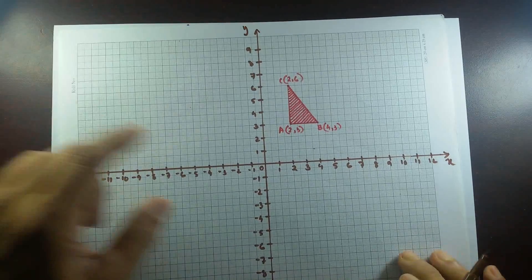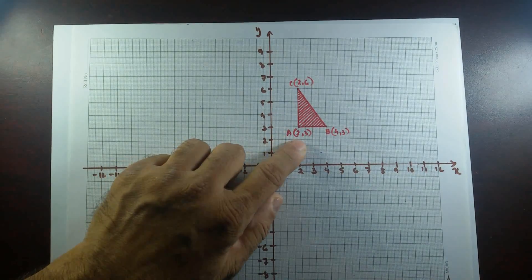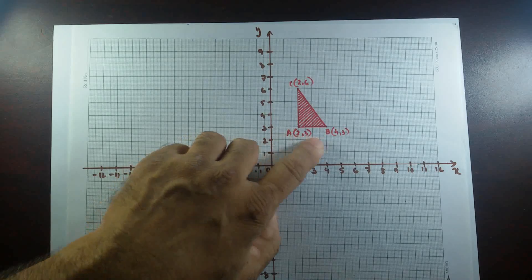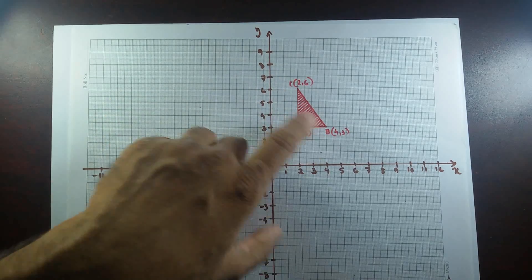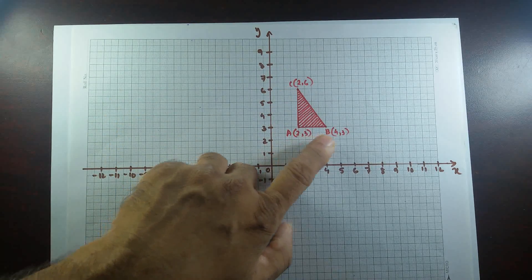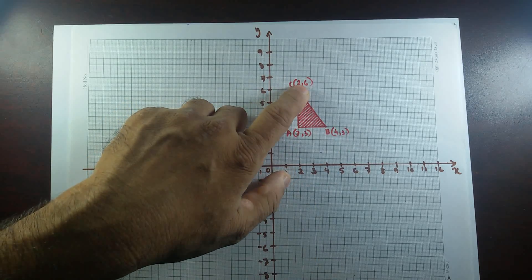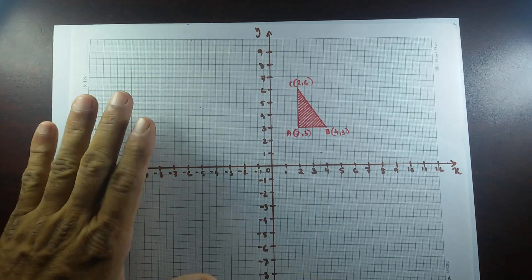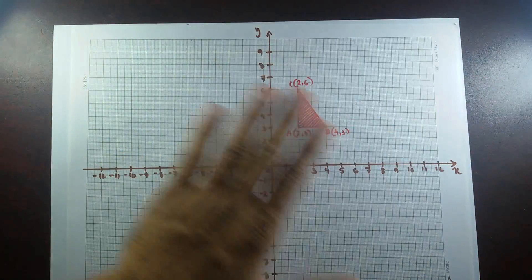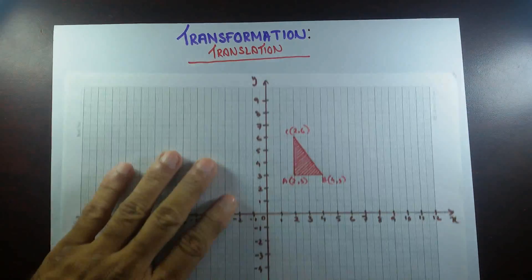I have drawn a triangle for you. The triangle has three vertices A, B, C with coordinates A(2,3), B(4,3), and C(2,6). If this triangle just slides anywhere on this two-dimensional space, that's our translation.